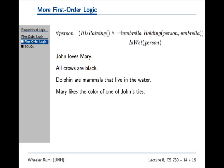Oh, look at all the great things you can say. For all people, it is raining and not there exists an umbrella. Holding person umbrella, I think there's an implication here somewhere, implies is wet person. If it's raining and the person, and there doesn't exist an umbrella that the person is holding, the person is not holding an umbrella, then the person gets wet. Wow, like that's the kind of thing you can imagine wanting to write down. Like that's so useful to know.